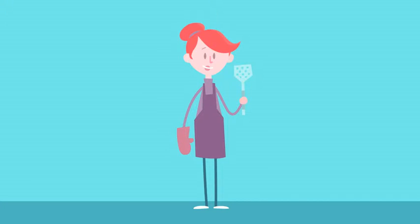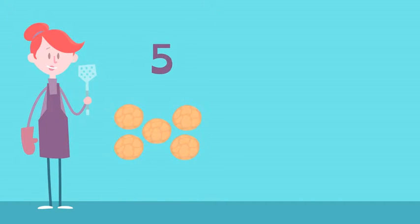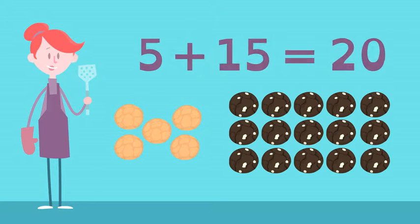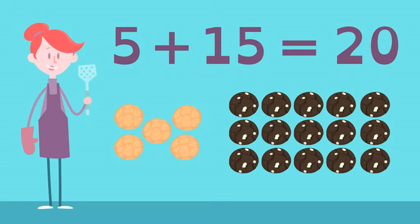Lucy bakes cookies for 5 of her friends, 5 lemon and 15 chocolate for a total of 20 cookies. This mathematical equation represents the cookies.